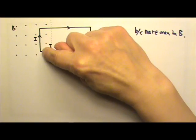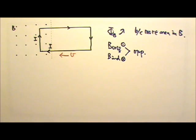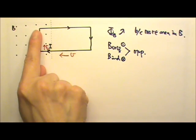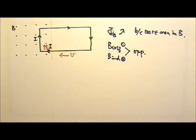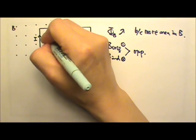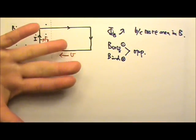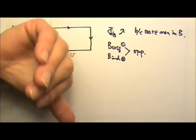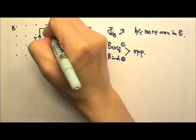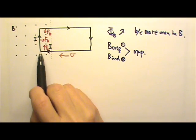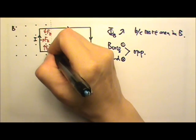For the segment of current inside the field going to the left, L cross B gives a magnetic force upward. For the part going down, L cross B gives a force to the right. For the part going up, L cross B gives a force downward. By symmetry, those two vertical magnetic forces are equal and opposite and cancel out.